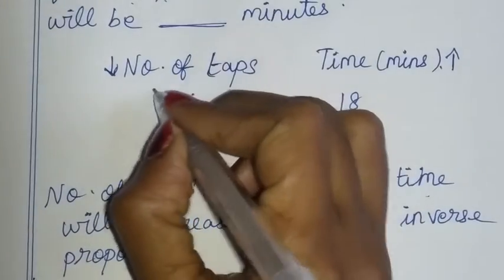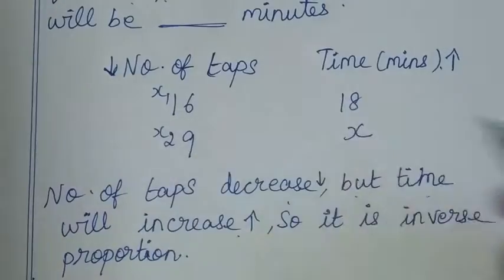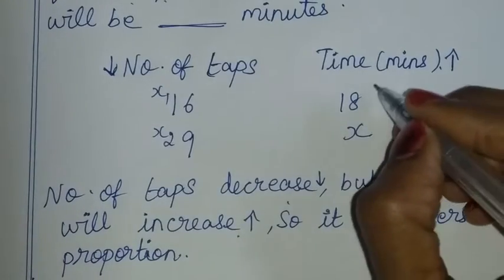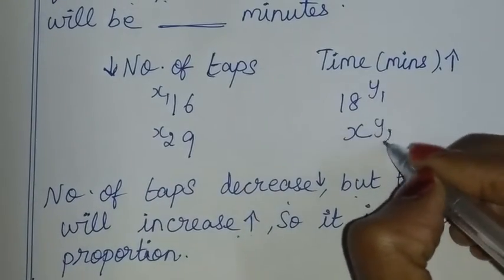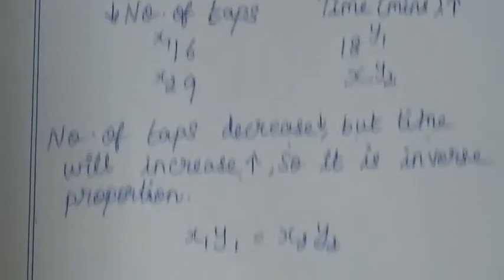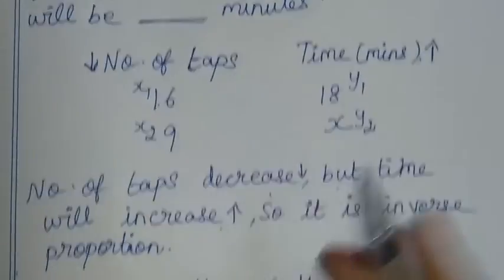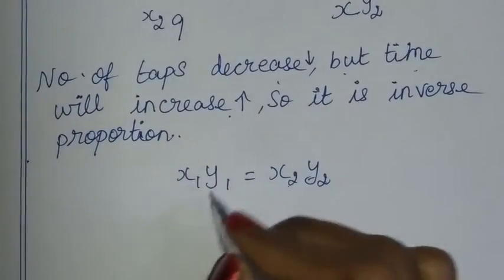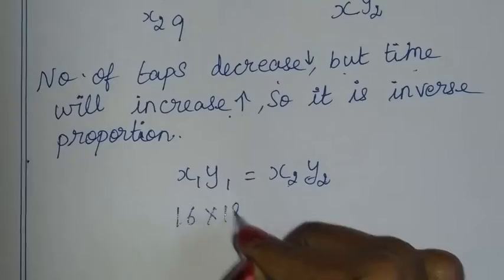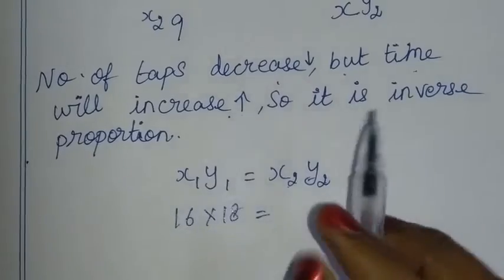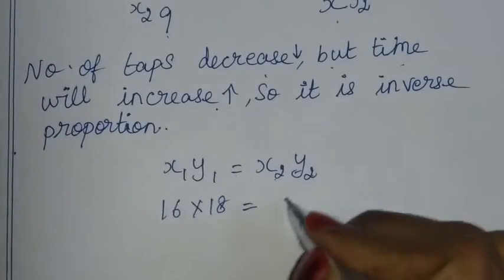So this is x1, this is x2. One quantity is x1, x2. This is y1, y2. The formula will be 16 into 18 — x1 into y1 — is equal to 9 into x.